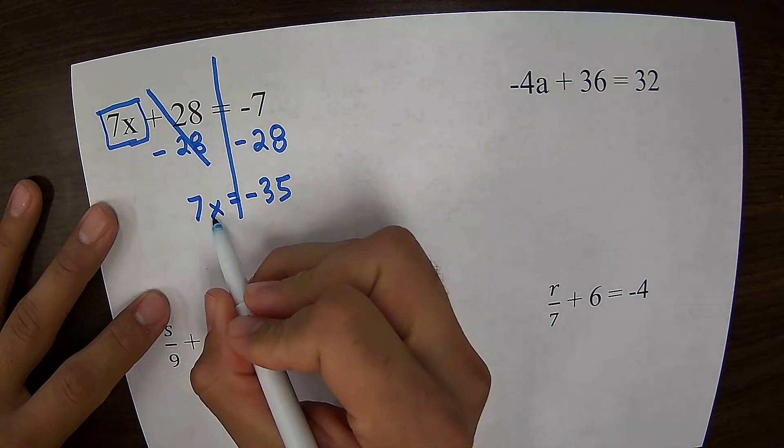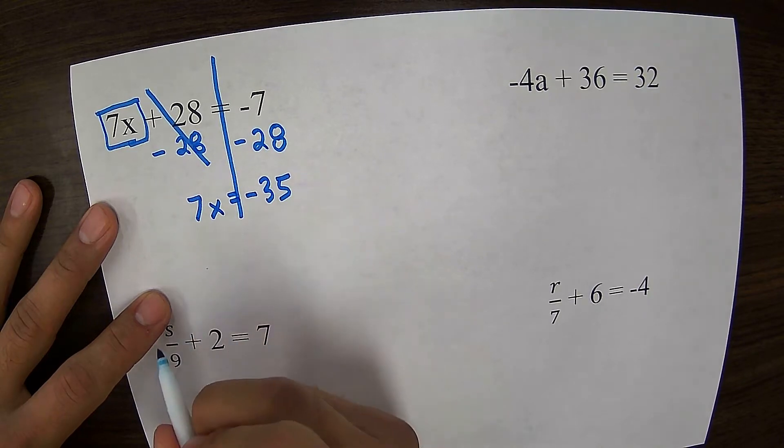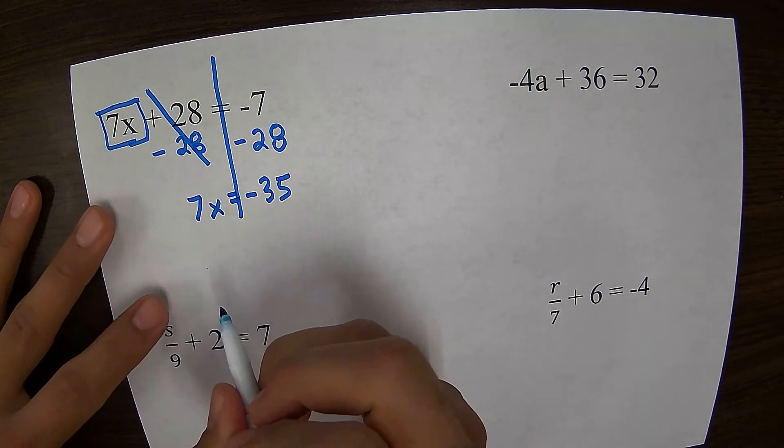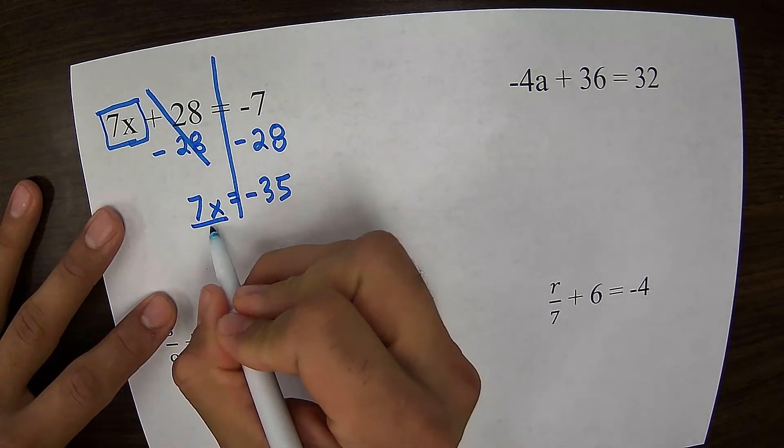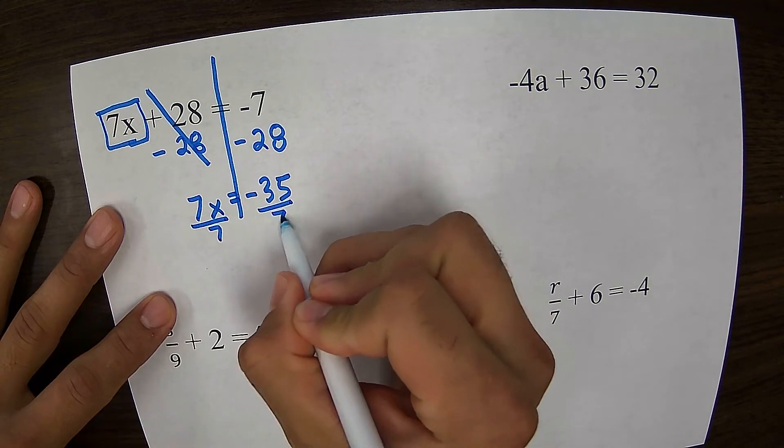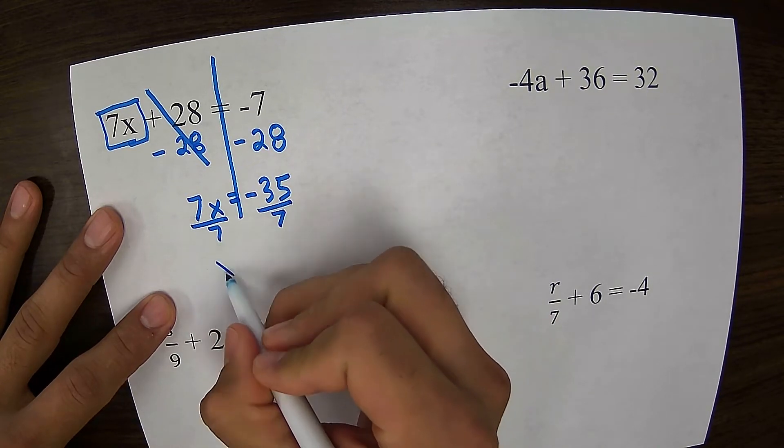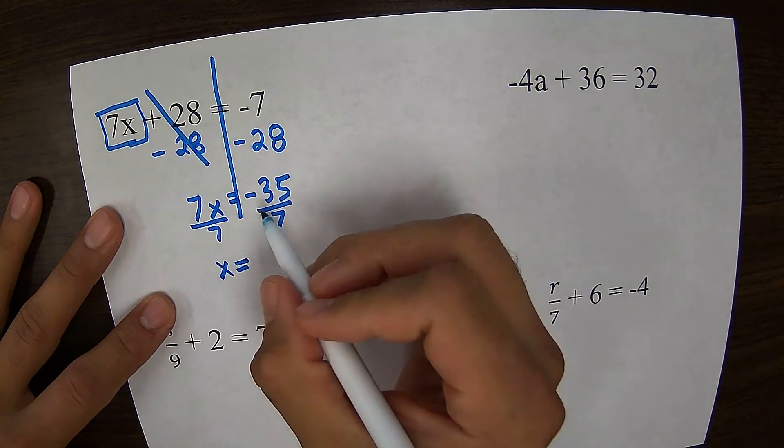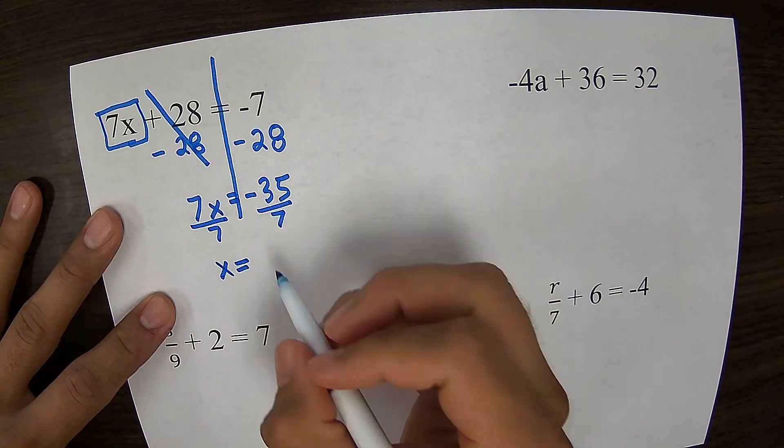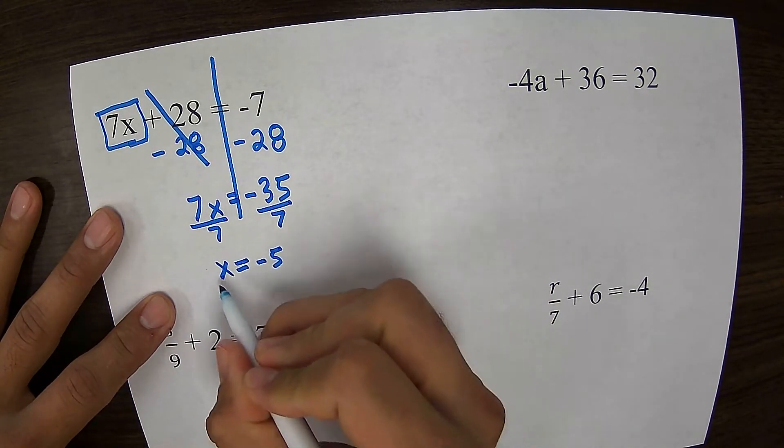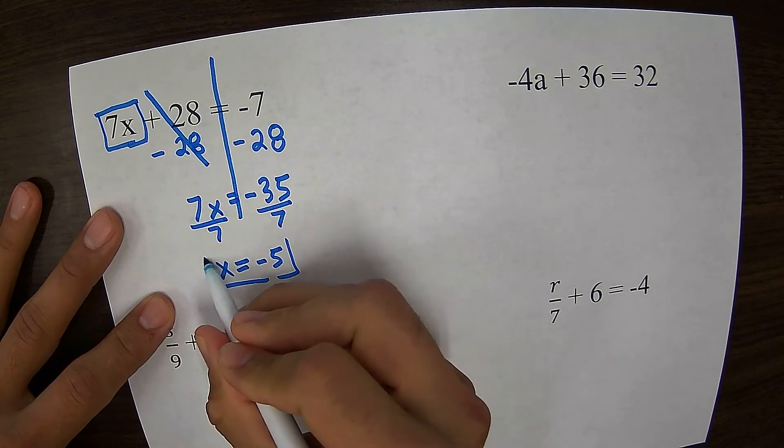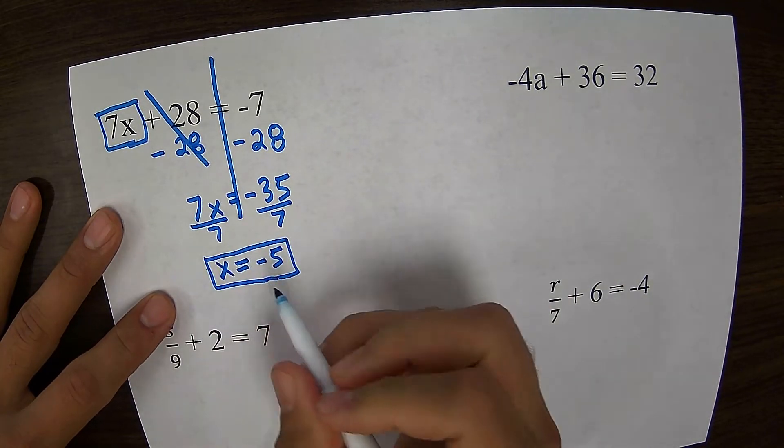Since 7 is being multiplied by x, I'm always going to do the opposite operation, which would be divide. I would divide both sides by 7. 7x divided by 7 gives me 1x. Negative 35 divided by 7 would give me negative 5. So my answer is x equals negative 5.